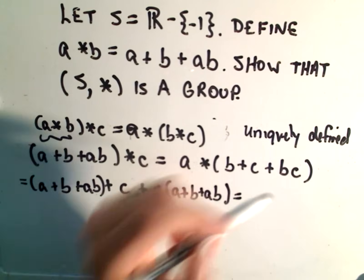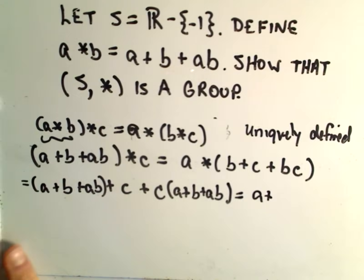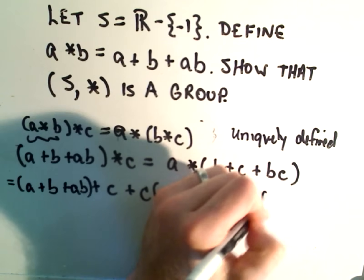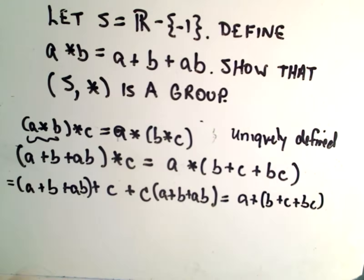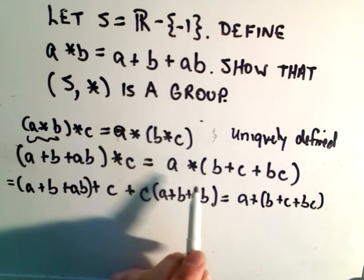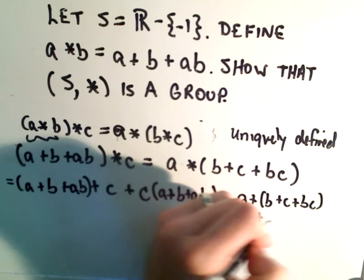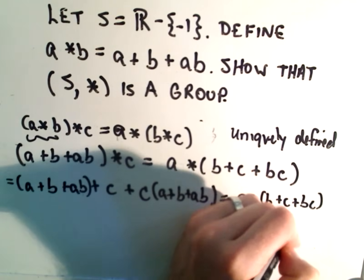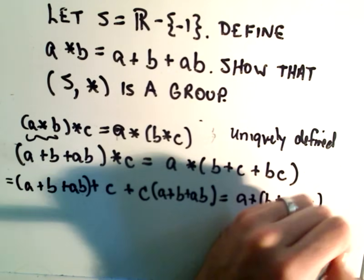A star this stuff gives us A plus B plus C plus BC. And then we multiply them together, which will give us A times B plus C plus BC.